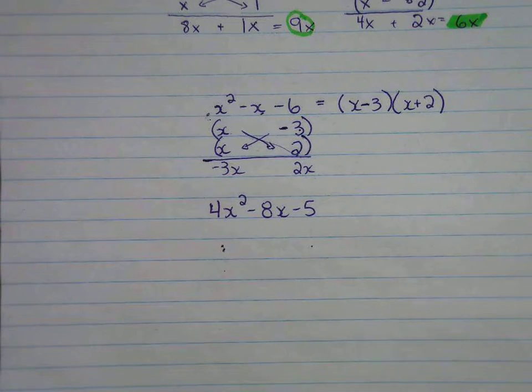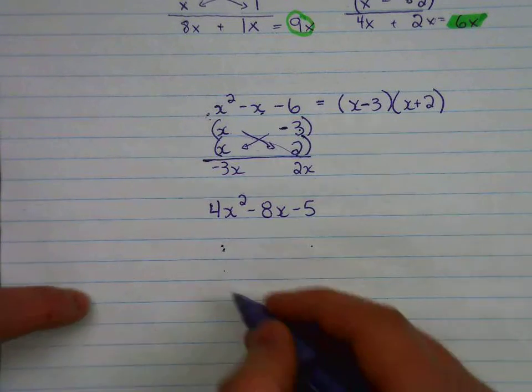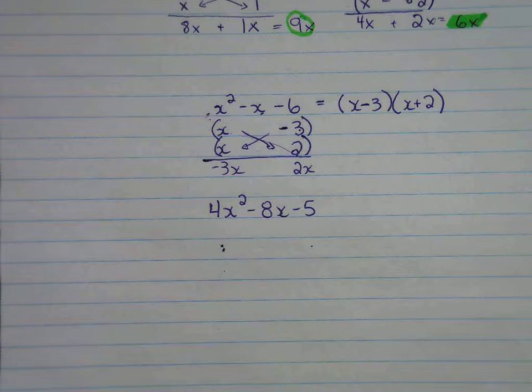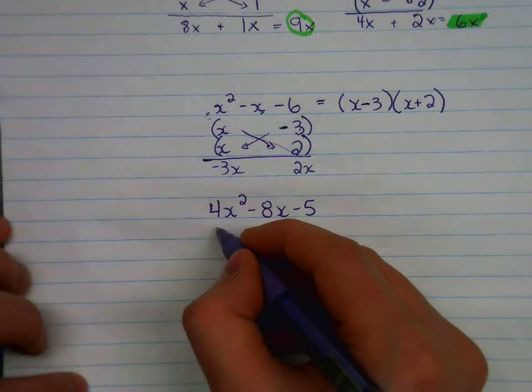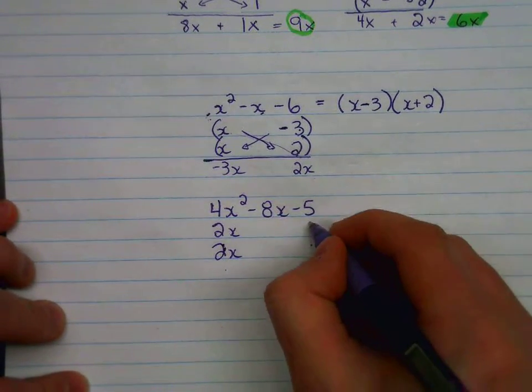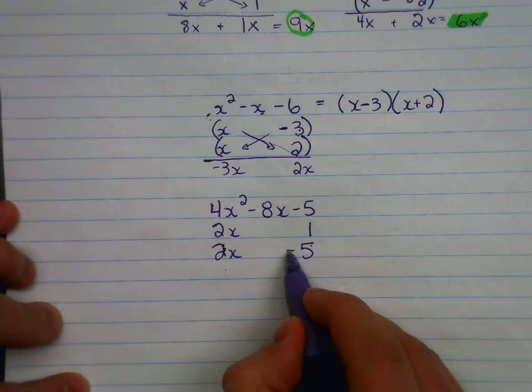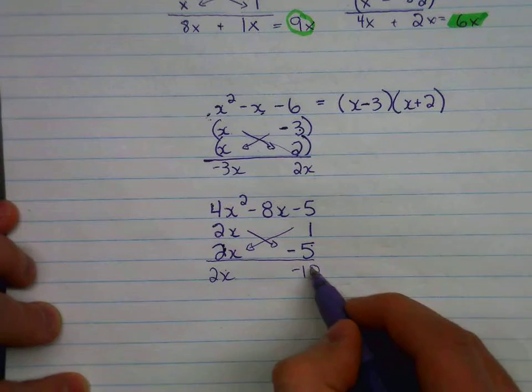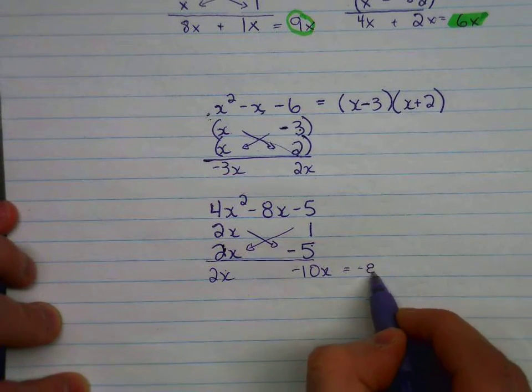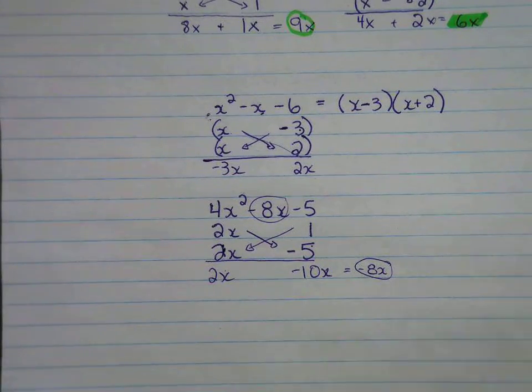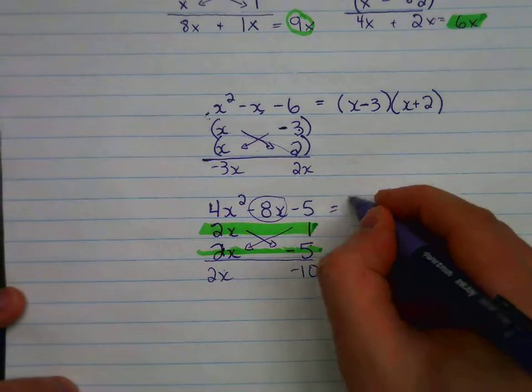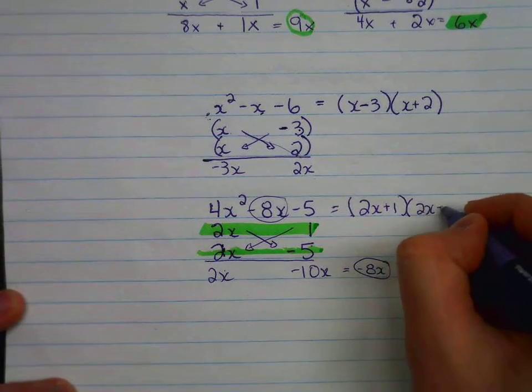You might try 4 and 1, you might try 2 and 2, and I'll leave this for you to try. You can pause the video now. The answer is 2x times 2x, 1 times 5. Negative would have to be on the negative 5 so that when you diagonally multiply, we have our 2x, our negative 10x, which adds together to make the negative 8x that we were hoping for. Factors written horizontally are 2x plus 1 and 2x minus 5.